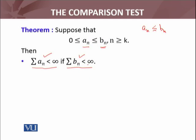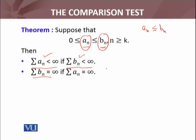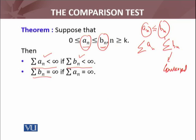Mathematically hum yeh likhte hain ke summation b_n is less than infinity, matlab ke sum of the infinite series is finite. And the other part of the comparison test states that b_n diverge karegi — the larger series jis ki terms bari hain — if a_n is divergent. Agar chhoti series jo hai jis ki terms less hain, yeh series agar diverge karegi then larger summation b_n jo hai yeh bhi diverge karegi. Lekin convergent jo hai woh ulta hai: b_n agar convergent hai, this is convergent, then it implies a_n jo hai woh bhi converge karegi.